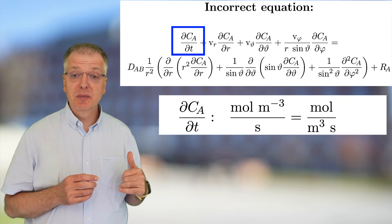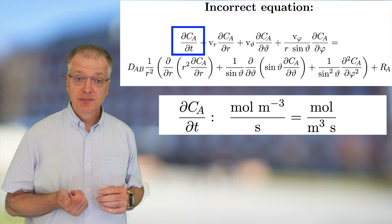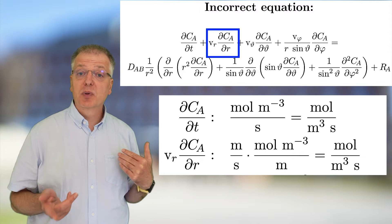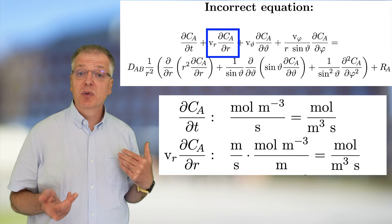The derivative of concentration with respect to time has the unit mol per cubic meter and second, and thus all the other terms must have that unit. The next term is okay. The velocity Vr has the unit meter per second, and the partial derivative of concentration with respect to distance has the unit mol per meter to the fourth, giving us the unit mol per cubic meter and second.